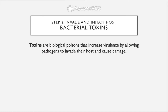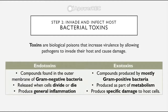Another type of compound created by bacteria are bacterial toxins — biological poisons that increase virulence by allowing pathogens to invade their host and cause damage. We have two types: endotoxins and exotoxins. Endotoxins are compounds found in the outer membrane of gram-negative bacteria and are released when cells divide or die, producing general inflammation. Exotoxins are compounds produced mostly by gram-positive bacteria as part of their metabolism, and they produce specific damage to host cells.